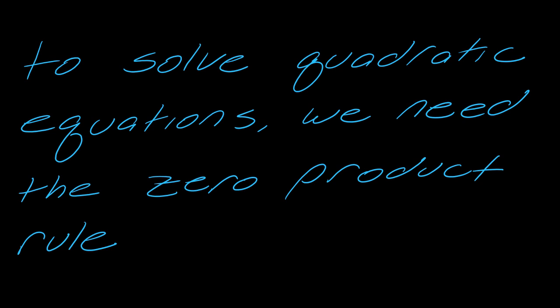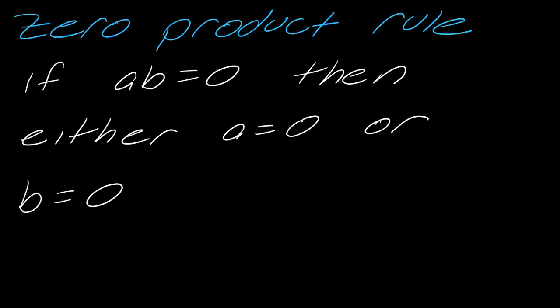In this video we're going to talk about how to solve equations like this, and what we need is something called the zero product rule, which is actually something pretty obvious, although it looks more complicated than it is. It says if a times b equals zero, then either a equals zero or b equals zero. This is something that I think you would know without me really telling you, but we're going to use this property in a second.